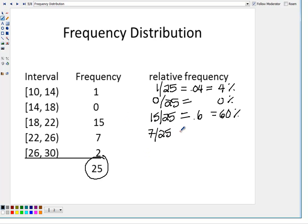The next one would be 7 out of 25. When we divide that out, I get 0.28 or 28%.